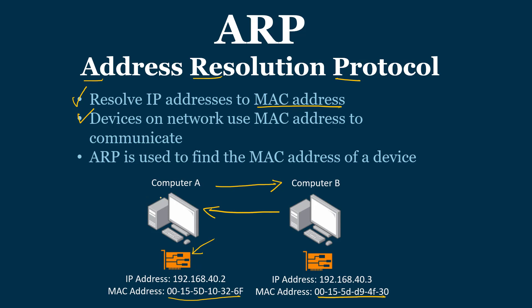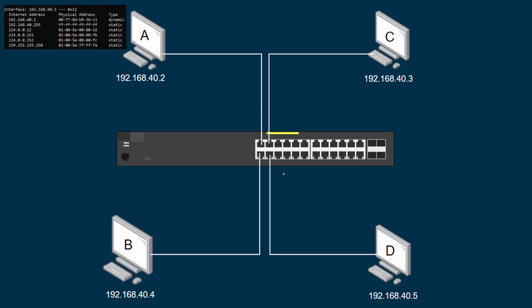That's where ARP comes in. If computer A doesn't know computer B's MAC address, the ARP protocol is used to find that device's MAC address. So let's take a look at this on my network. I've got computer A and I want to send data to computer C, but I don't know its MAC address.